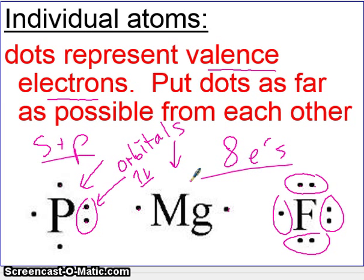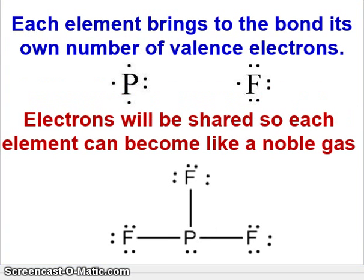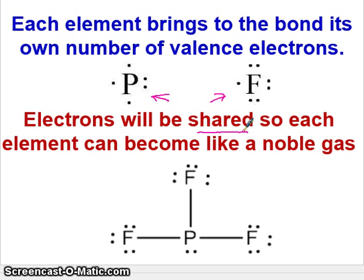Every element has four possible sides for a total possible of eight electrons, and we will see in a minute why eight electrons is the magic number. Each element brings to the bond its own number of valence electrons, and then phosphorus and fluorine will share these electrons so that each element becomes like a noble gas.